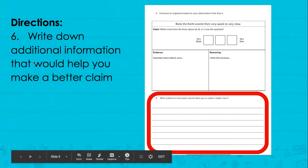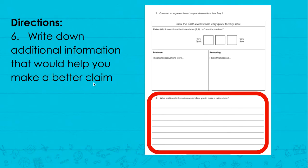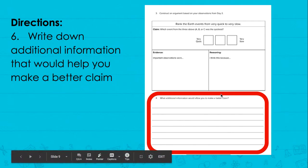Step six: you're going to write down additional information that would help you make a better claim. Whatever you think would help you make a better claim is what you're going to write here.